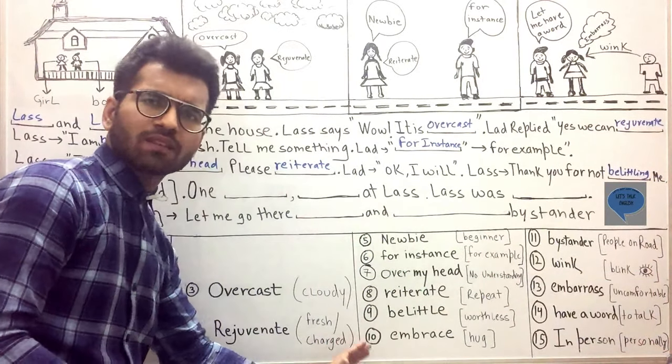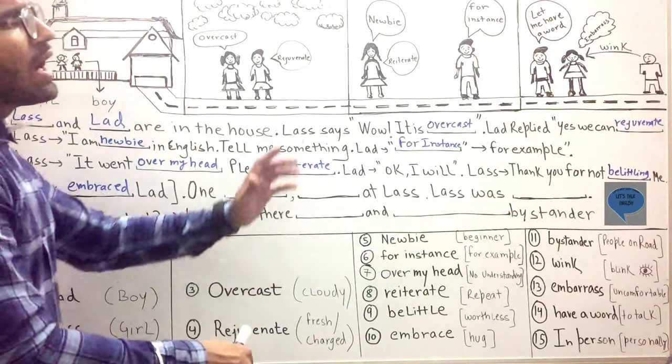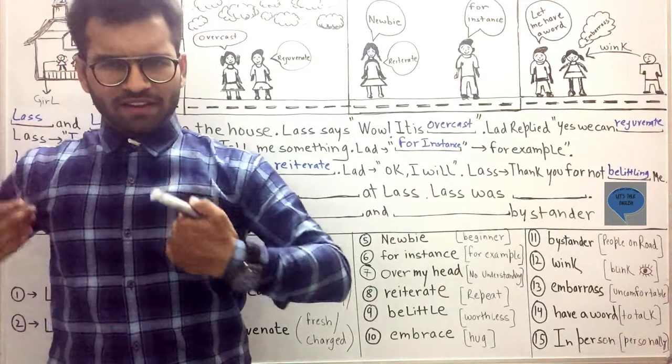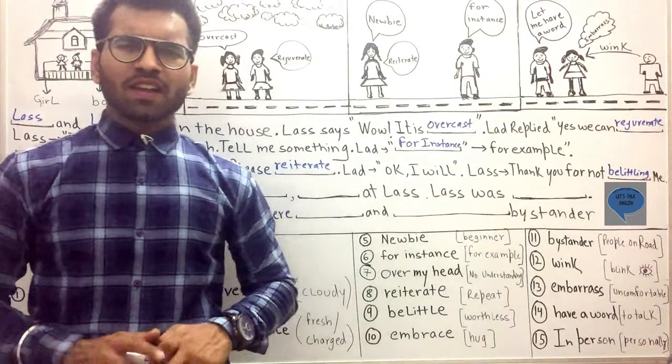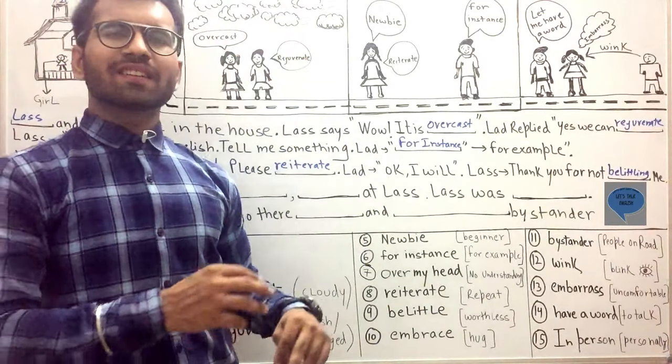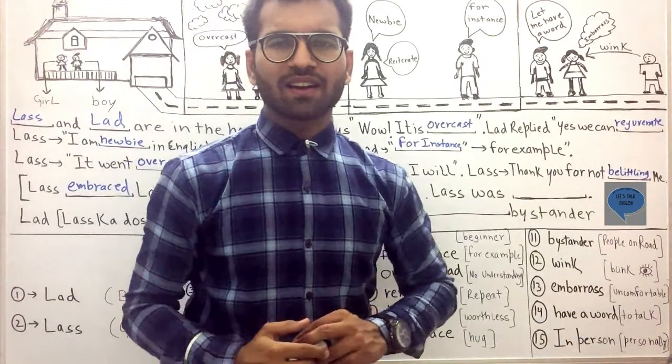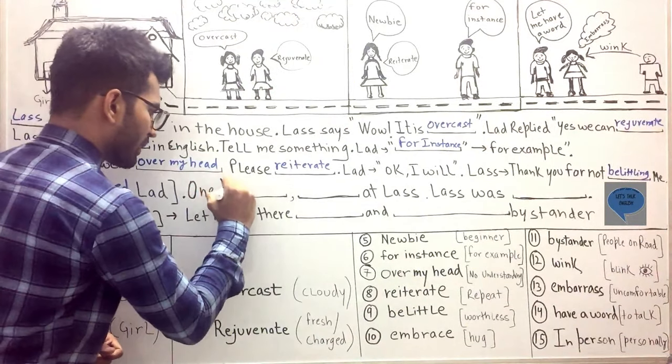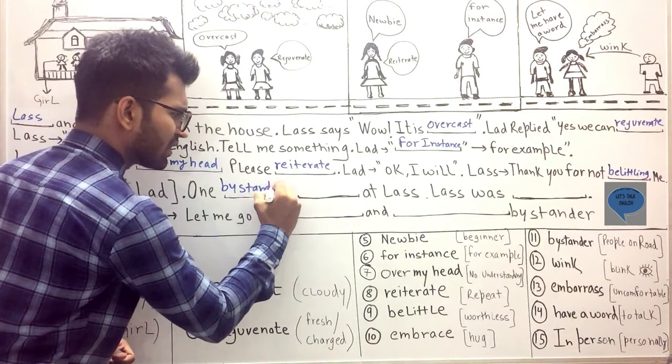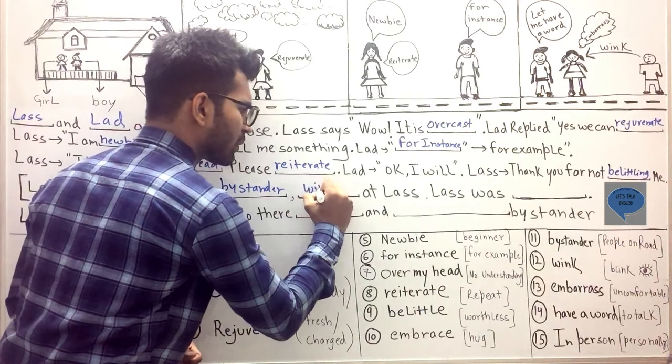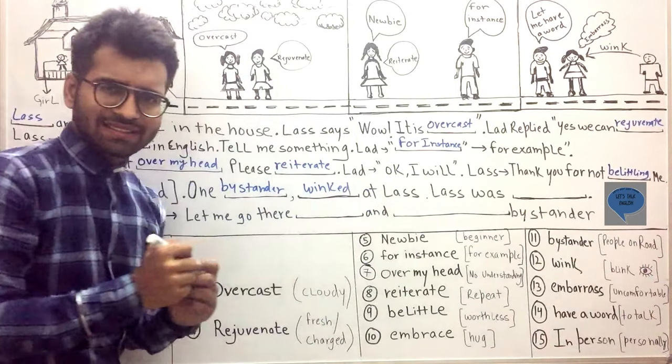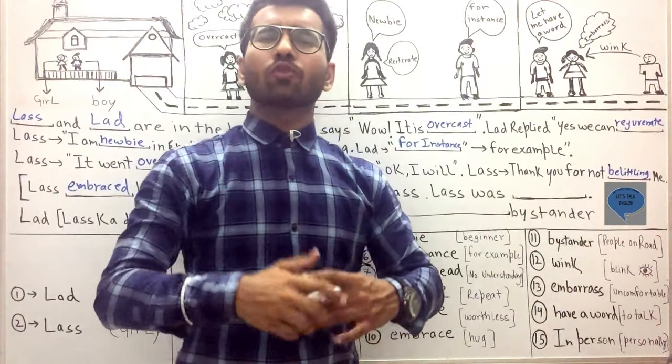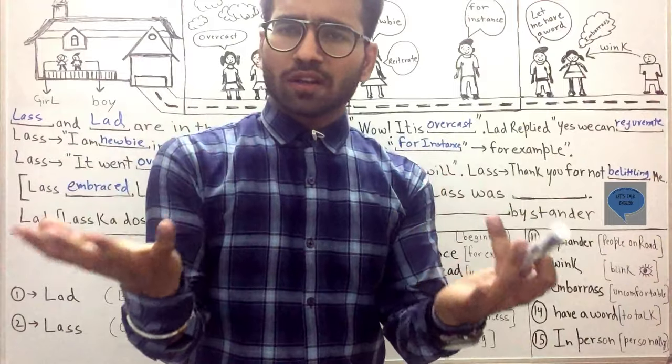Now picture number four. Picture number four is very simple. What do you see? You see a lad, a lass, and a bystander. But they both were walking and bystander winked. Bystander winked at lass. So one bystander, a stranger on the road, winked - winked means eye gesture - winked at lass. And when some unknown person winks at a girl, obviously lass will get uncomfortable or she will get nervous. So lass was embarrassed. Lass was embarrassed means lass was uncomfortable.